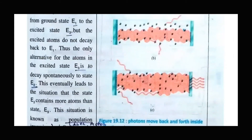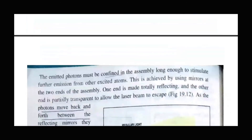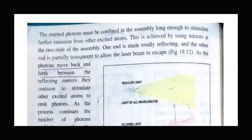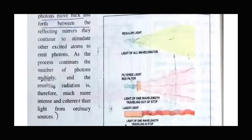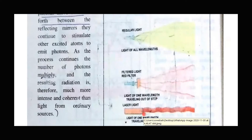I hope students you understand this lecture — laser action, population inversion, spontaneous and stimulated emissions, and how we process them. The photons move back and forth in the confined assembly, and the laser beam is produced through the partial reflecting mirror at a specific wavelength determined by the color and wavelength of the laser. Thank you so much.